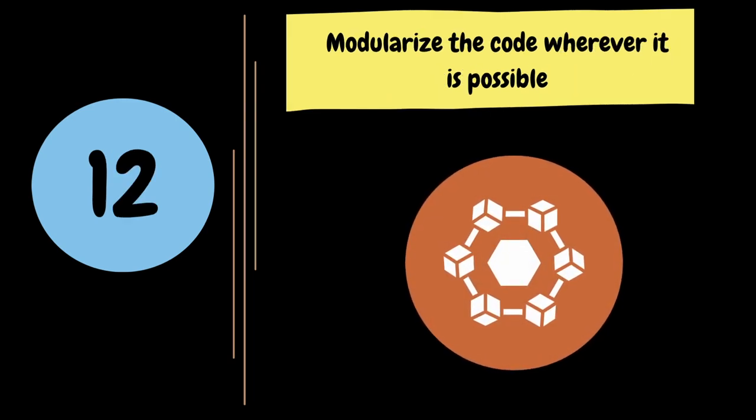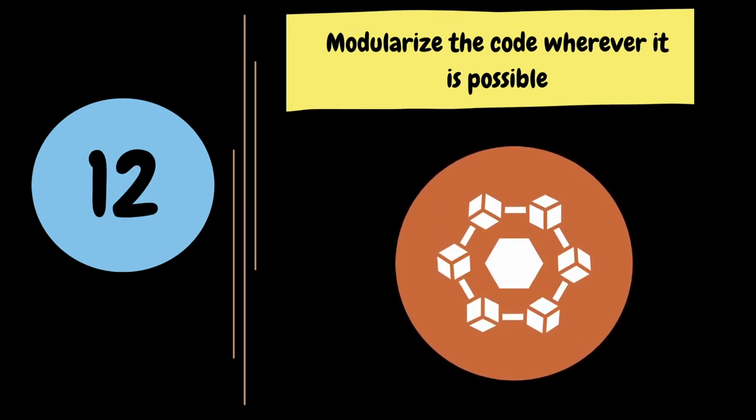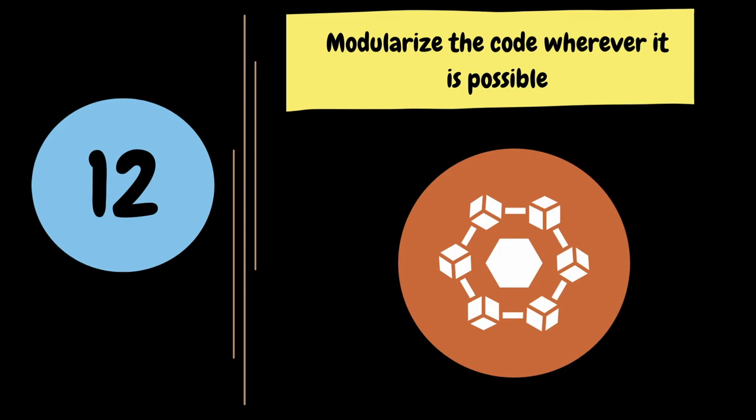Instead of creating large scripts, break down your test logic into smaller, self-contained modules or functions. These modules can focus on specific functionalities or user actions. Make your modules adaptable by parameterizing input values, which allows you to reuse the same modules with different input data. Modular code is easier to maintain — when a change is required, you can update a specific module without affecting the entire script. Once you have created reusable modules, you can leverage them across different projects, saving time and effort.